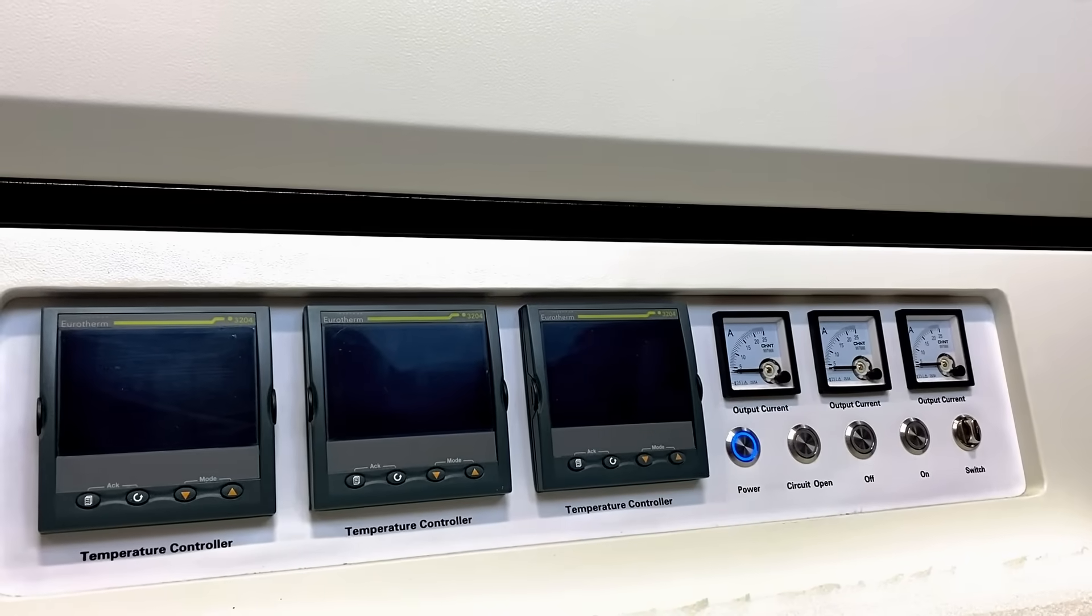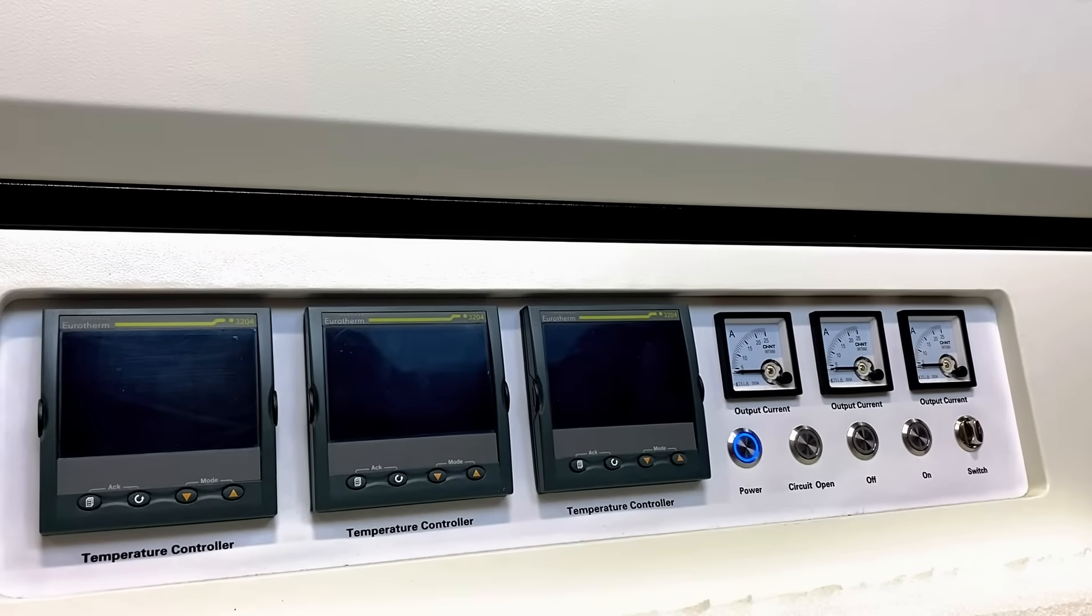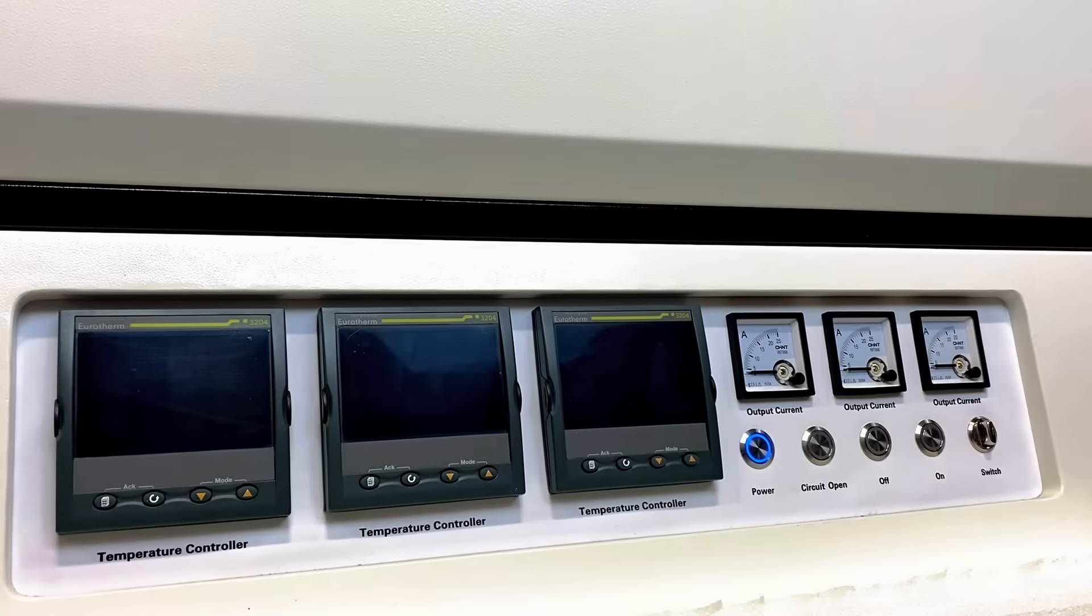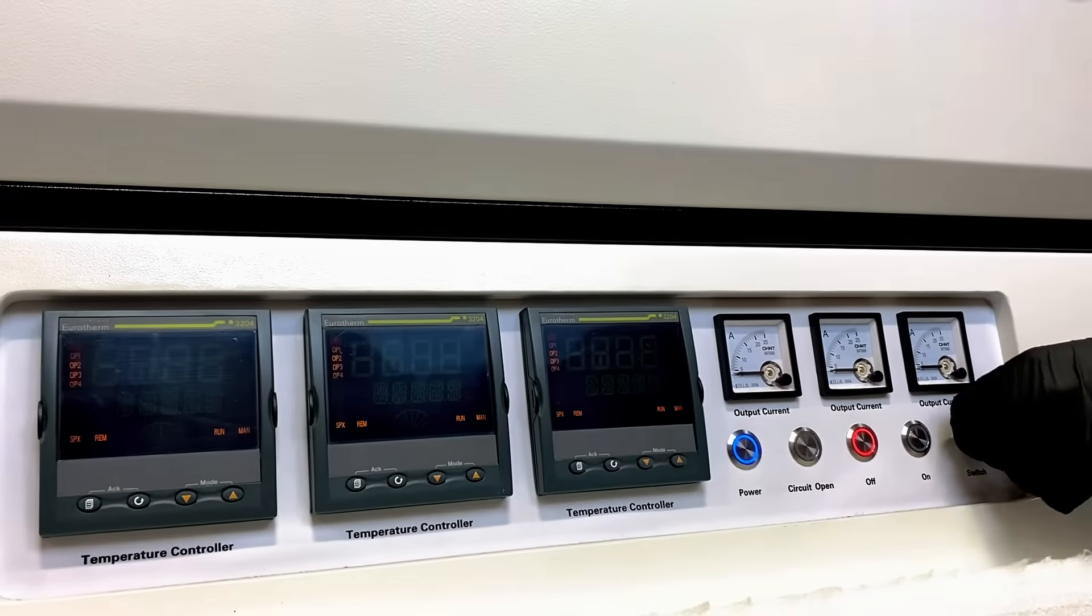To program your Across International tube or chamber furnace temperature, first connect to the power supply and switch the furnace on.